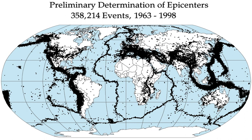In Japanese mythology, Namazu is a giant catfish who causes earthquakes. Namazu lives in the mud beneath the earth, and is guarded by the god Kashima who restrains the fish with a stone. When Kashima lets his guard fall, Namazu thrashes about, causing violent earthquakes.